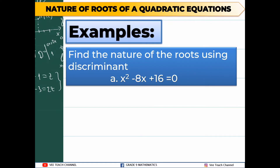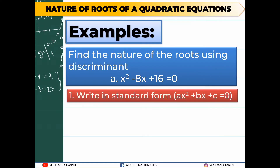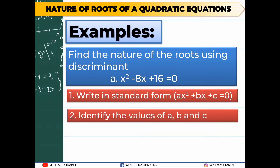To find the discriminant, the first step is to write the equation in standard form: ax squared plus bx plus c is equal to 0. Our given equation is already written in standard form, so there is no need to transform it.